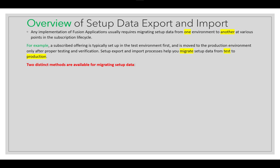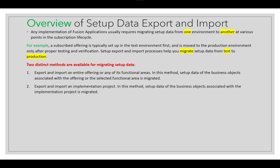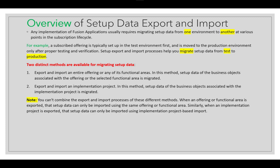There are two distinct methods available in Oracle Cloud for migrating setup data. The first is to export and import an entire offering or any of its functional areas — setup data of the business objects associated with the offering or selected functional area is migrated. The second method is export and import via an implementation project, where setup data of the business objects associated with the implementation project is migrated. You cannot combine these two methods: if an offering or functional area is exported, it can only be imported using the same offering or functional area. Similarly, if an implementation project is exported, it can only be imported using implementation project-based import.